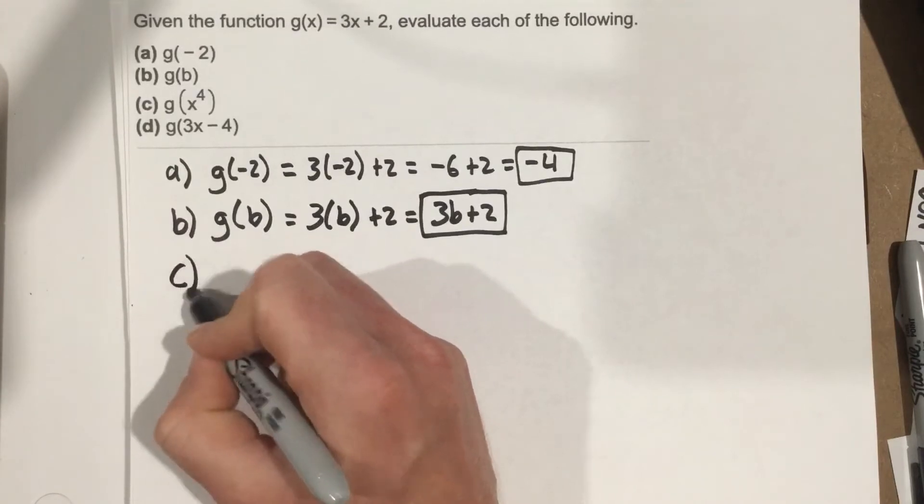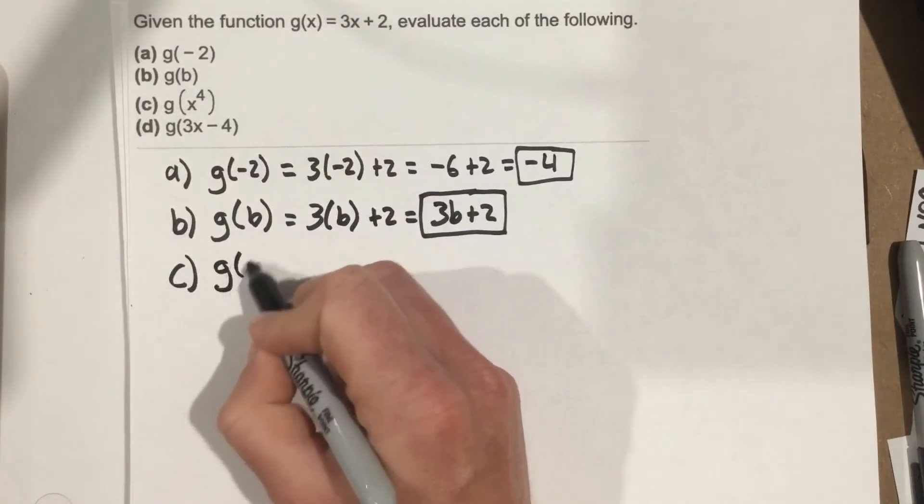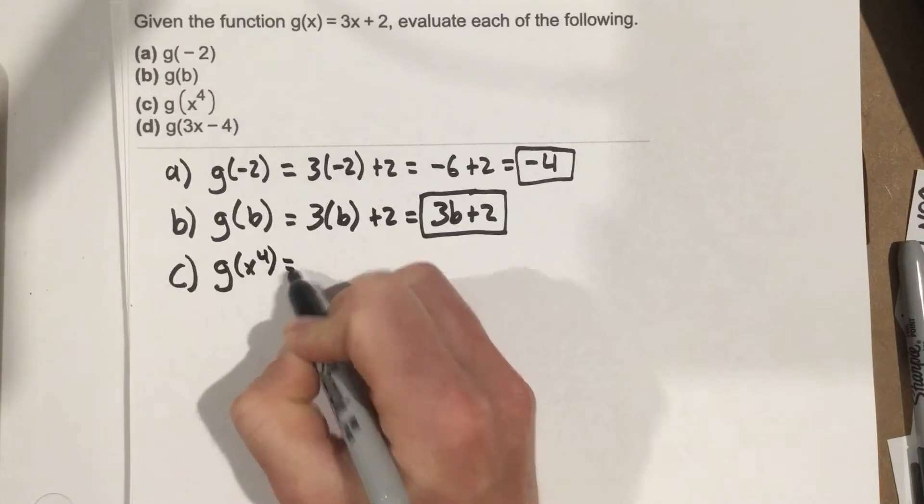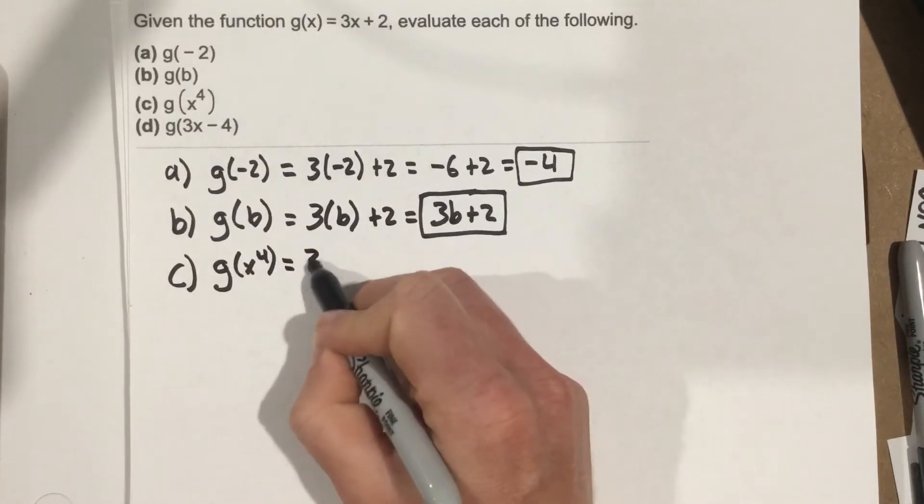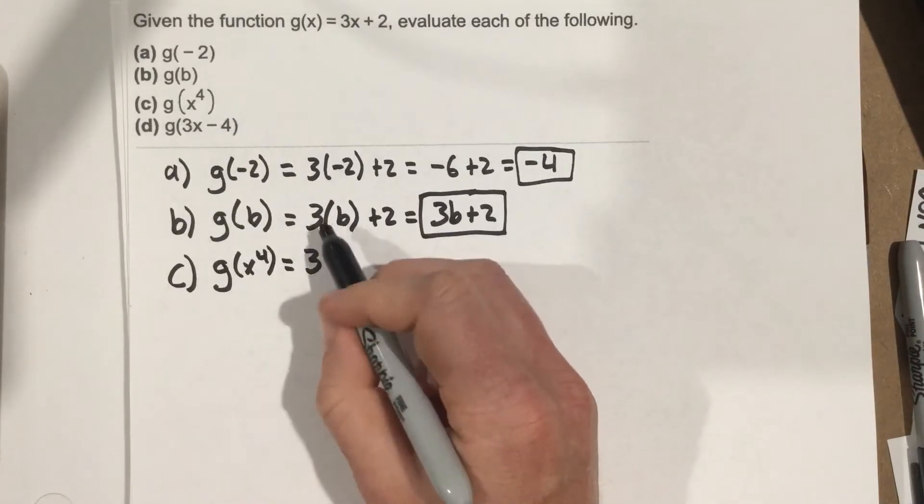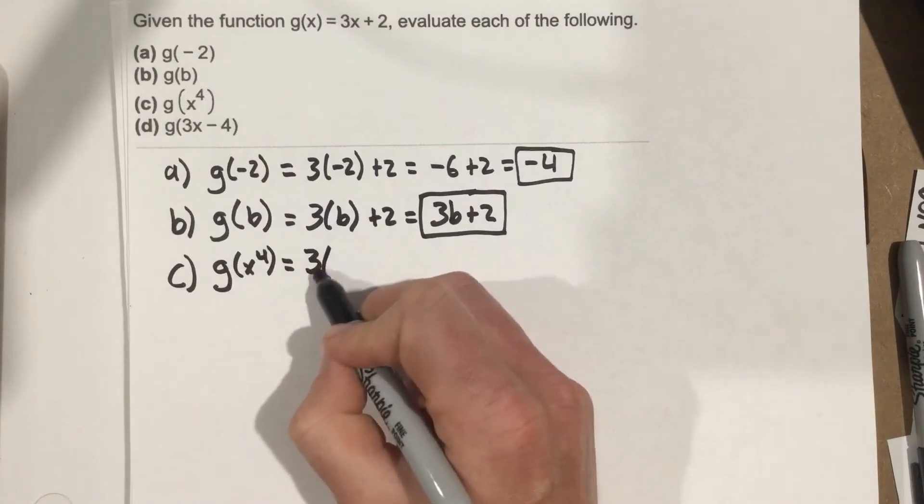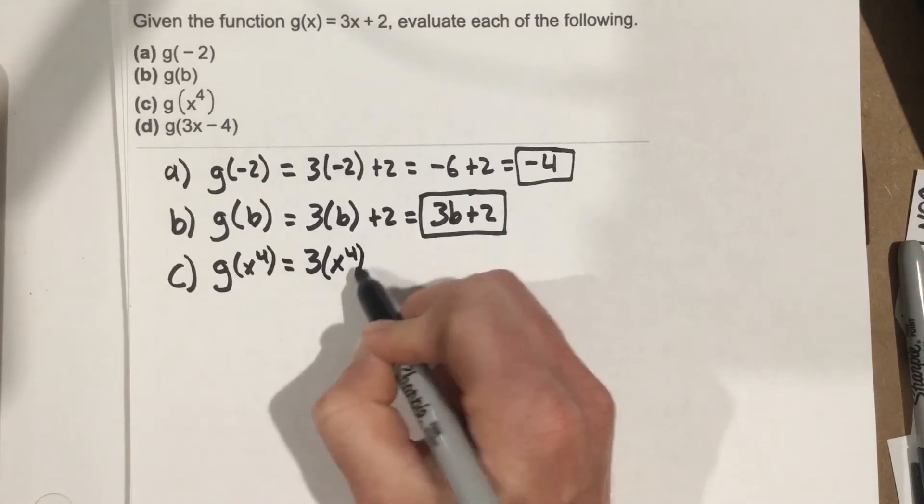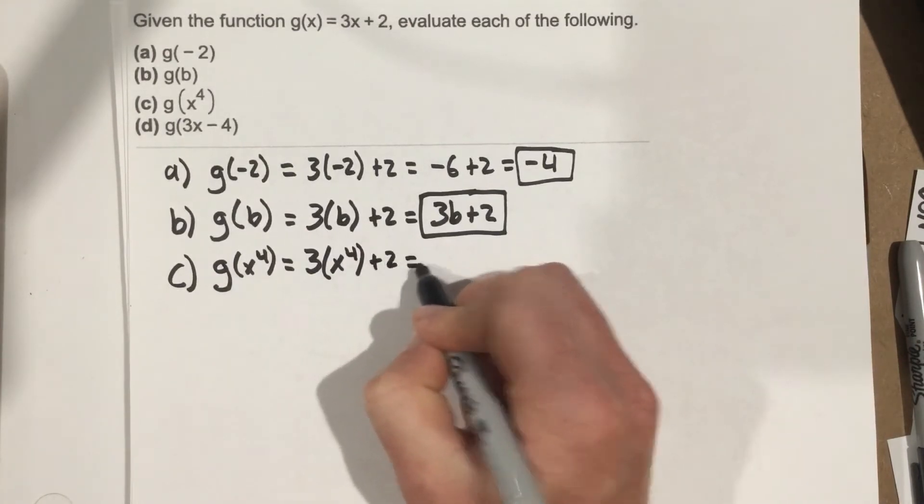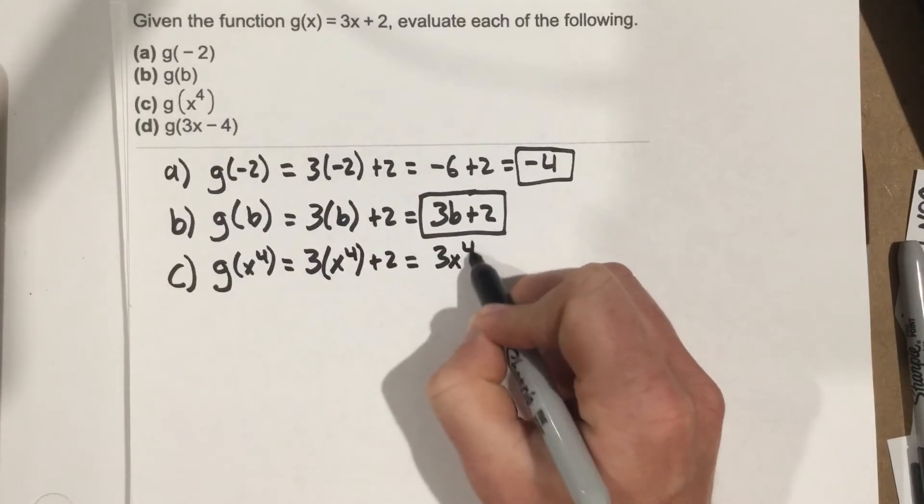Part C. g of x to the 4th. So we're going to plug x to the 4th in for our x part. So we have 3 times x to the 4th plus 2, which is 3x to the 4th plus 2.